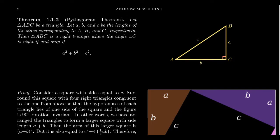If ABC is a right triangle, this happens if and only if the sum of the squares of two sides of the triangle equals the square of the length of the other side. So if you have a right triangle, if you take the two legs of the triangle, square those lengths and add them together, that equals the square of the hypotenuse.